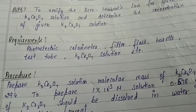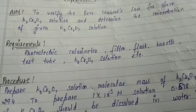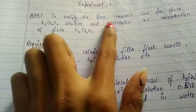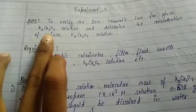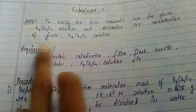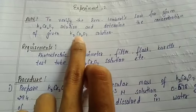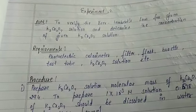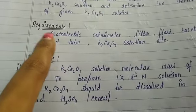Good morning everyone, I am Shivani. I am studying BSc Chemistry, third year. Today we perform our experiment that is to verify the Beer-Lambert's law for given potassium dichromate solution and determine the concentration of K₂Cr₂O₇ solution.